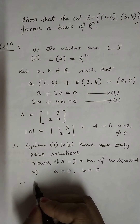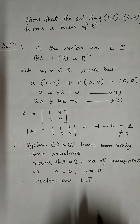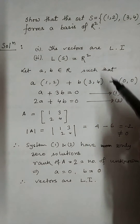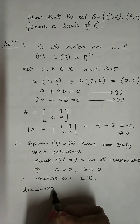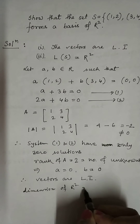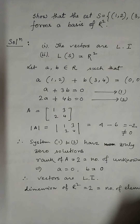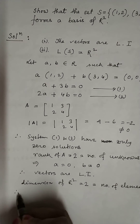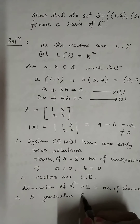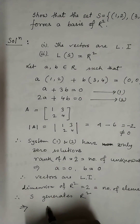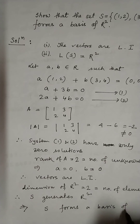Therefore, the vectors are linearly independent. For the second condition, the dimension of R² is 2, which equals the number of elements in S. Therefore, the set S generates R², which implies S forms a basis of R².